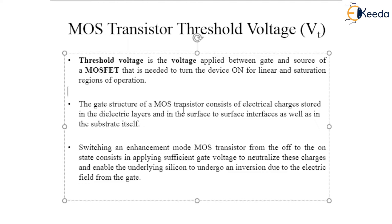The gate structure of a MOS Transistor consists of electrical charges stored in the dielectric layers, in the surface-to-surface interface, as well as the substrate itself. The MOS Transistor has electric charges that are going to be stored in the dielectric layer, the surface-to-surface interface, and the substrate itself.